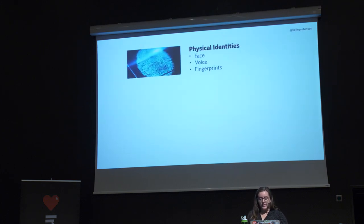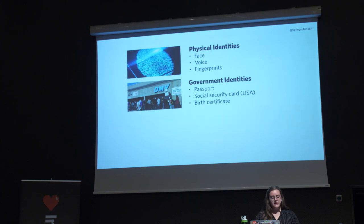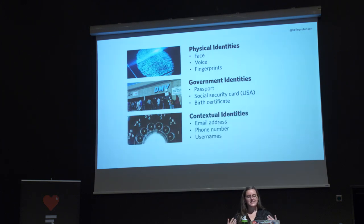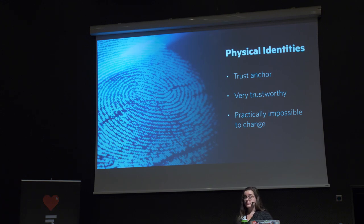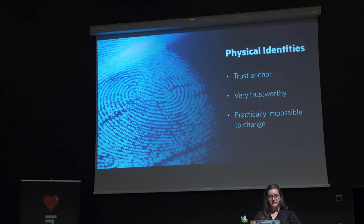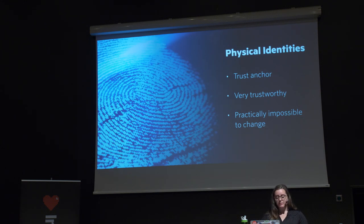I'm going to break down identities into three categories I invented. First, physical identities — biometrics we can't easily change about ourselves. Second, government identities — things that are generally state-issued. Third, contextual identities — identities we've established mostly with the internet, which are generally easier to change. If you're verifying identity with someone you know, you're probably using physical identity. This is how your parents know who you are, and it's a very trustworthy form of identity management. Being able to say 'I recognize that person' is very valuable.